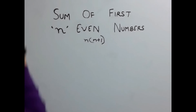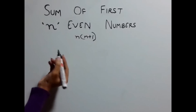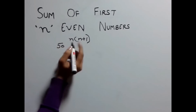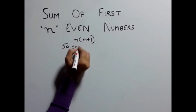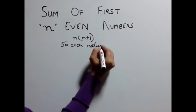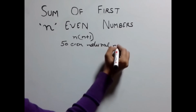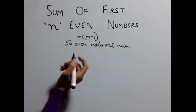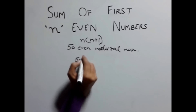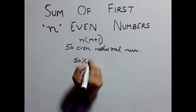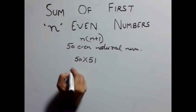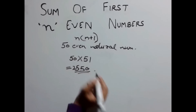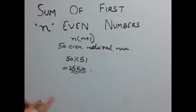Let's have one more example. Let's add the first 50 even natural numbers. Here n is 50, which gives us 50 into 50 plus 1, that is 50 into 51, which gives you 2550 as the answer. Simple.